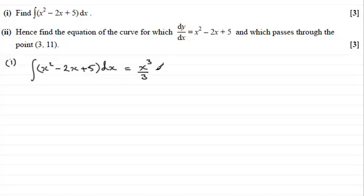And then for minus 2x add 1 to the power, so it's minus 2x squared, and then divide by the new power 2. And for the constant, plus 5, just multiply it by x. But do remember to put plus c, or any other letter for your constant of integration.